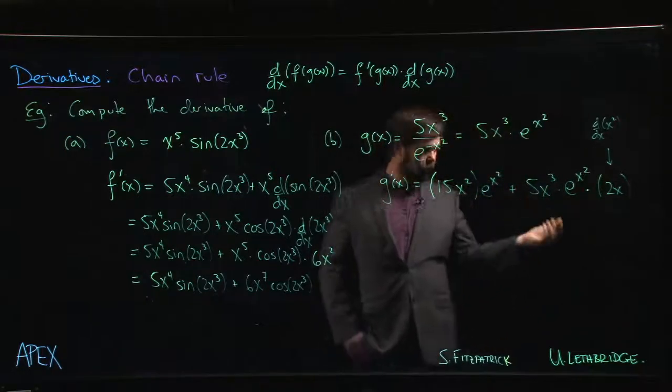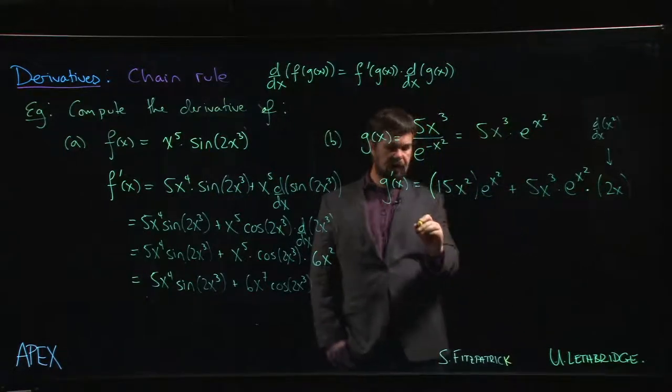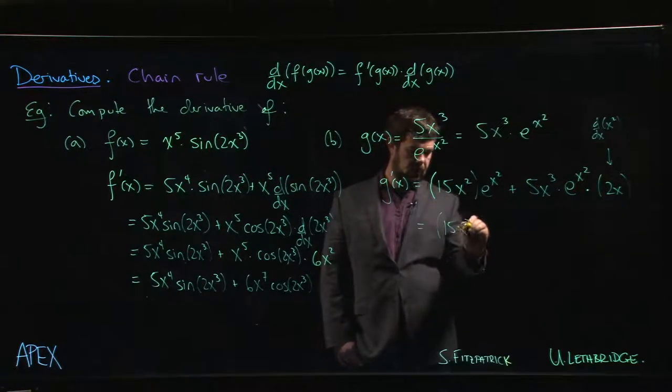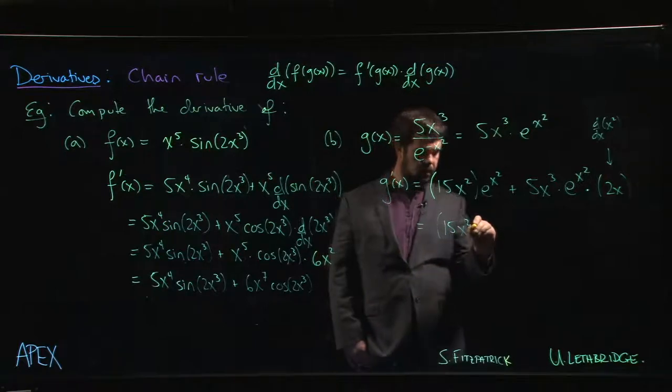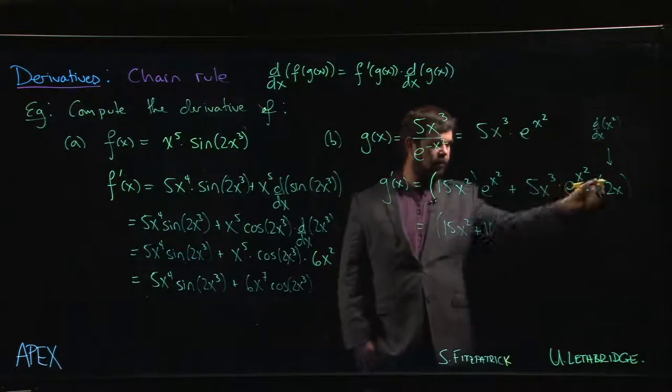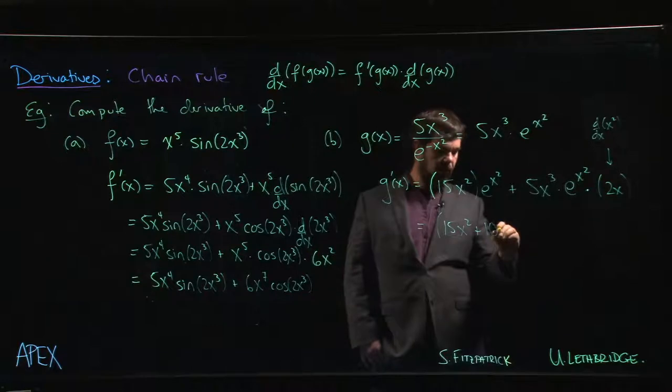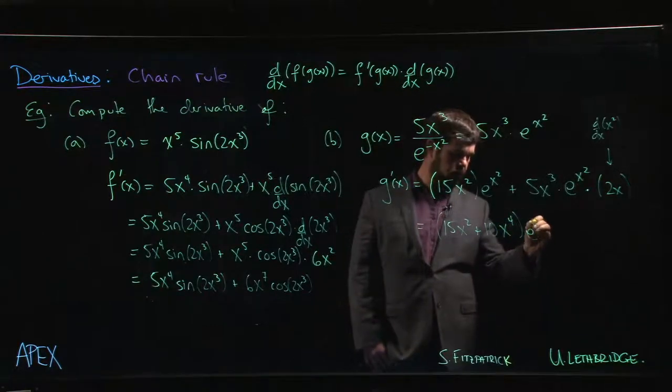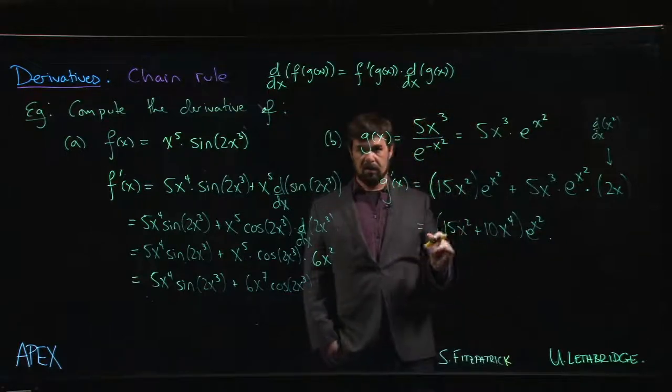So that 2x is coming from the derivative of x squared. Finally, if you want, we can clean this up. You can even factor out the e to the x squared if you want. So 15x squared plus, so 5 times 2 is 10, x cubed times x gives us x to the 4 times e to the x squared, and you're done.